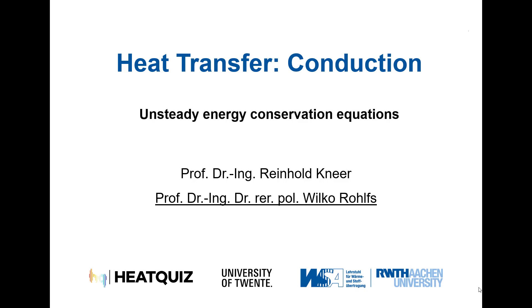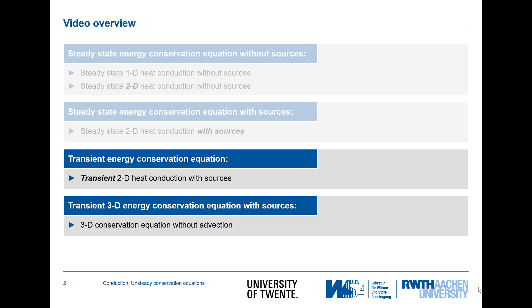In this video we will look at the unsteady energy conservation equations. In the last video we looked at steady-state energy conservation equations without sources in the one- and two-dimensional space, and introduced the topic of energy sources and sinks. In this video we will expand the equation to a transient process, starting with a two-dimensional transient conduction equation and finally expanding to three-dimensional space.